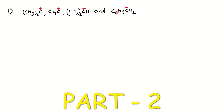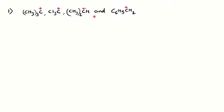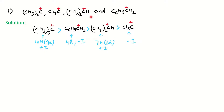We'll see the first problem: find out the stability order of carbocations. You have four molecules - the first has three alkyl groups (three methyl groups), the second has three chlorines, the third has two methyl groups, and finally you have a benzylic group. We know that the tertiary butyl group should be most stable, having nine hyperconjugated forms plus a positive inductive effect.